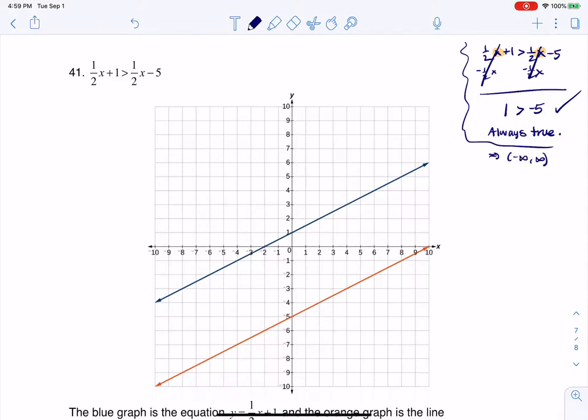So that's going to tell you that your solution here is going to be all real numbers. But let's play this out graphically. So let's look at the left side of this inequality and look at the line here.